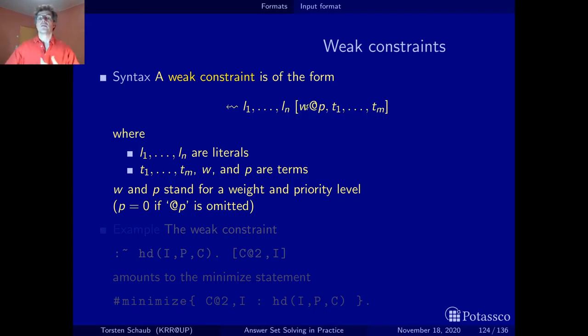In this way, you can define objective functions, and you can define several objective functions. Each objective function has the same priority level. With this, you implement lexicographic optimization. If you have two stable models, you evaluate the penalties at the highest priority level. If both have the same value, you go one down. If it's still the same, you go down once more, until one is smaller than the other, and then you prefer that one.